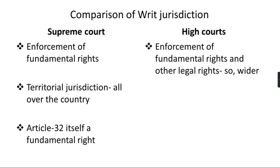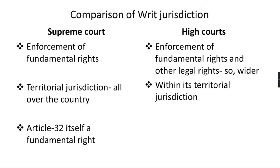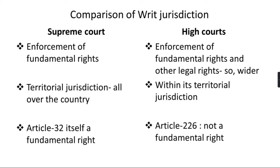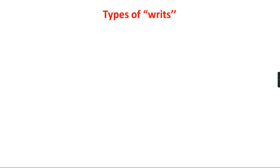Because Article 32 is a fundamental right, the Supreme Court is bound to issue writs in case of violation of fundamental rights. In contrast, High Courts can issue writs for enforcement of fundamental rights and also for other legal rights, making the writ jurisdiction of High Courts wider than that of the Supreme Court. However, High Courts can only issue writs within their territorial jurisdiction, and Article 226 — which empowers High Courts — is not a fundamental right, so High Courts may refuse to issue writs.